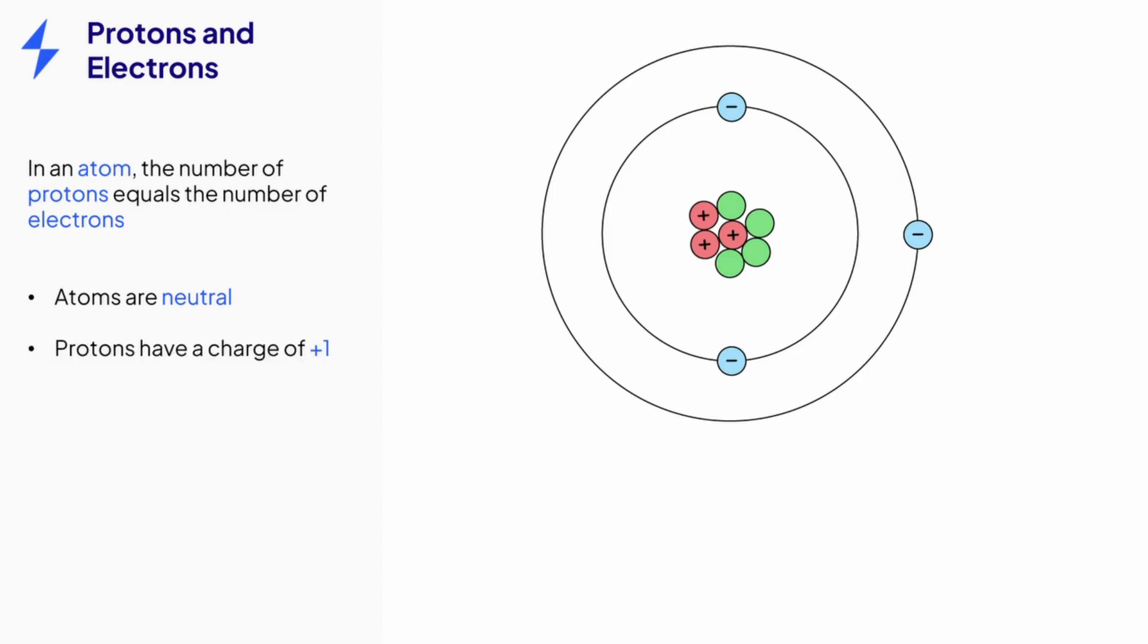We know that protons have a charge of positive 1 and that electrons have a charge of negative 1. So for atoms to be neutral, the number of protons must equal the number of electrons so their charges cancel out to zero.